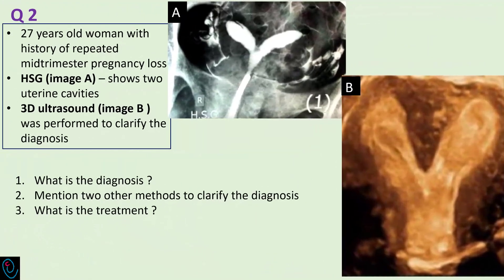In the second question, we have a 27-year-old woman with a history of repeated mid-trimester pregnancy loss. Hysterosalpingography image A illustrates two uterine cavities. 3D ultrasound in image B was performed to clarify the diagnosis. What is the diagnosis? Mention two other methods to clarify the diagnosis. And what is the treatment?